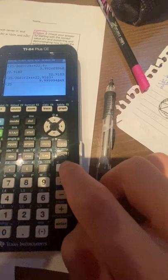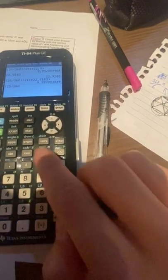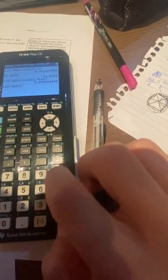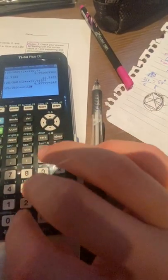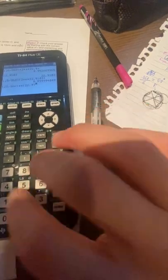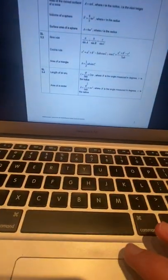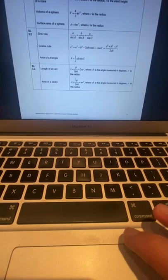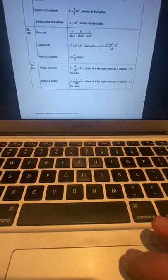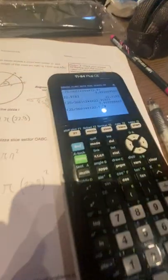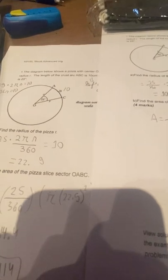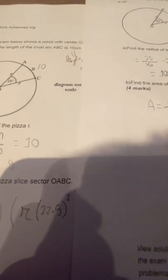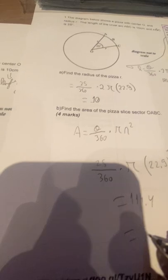25 divided by 360 times pi R squared. Just confirming, it's theta divided by angle, angle divided by 360 times pi R squared, that's what we did. We're gonna get an area of 114, 114.4, and rounded to a whole number would be 114.